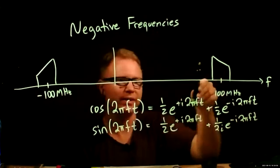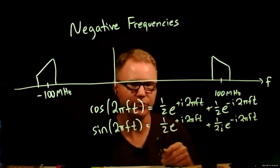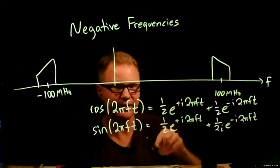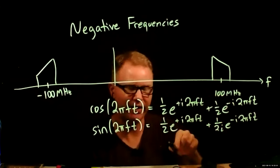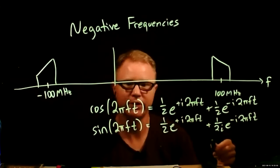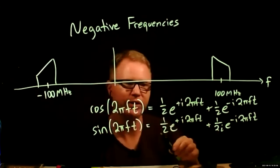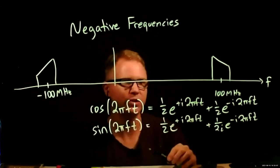When I'm plotting a power spectrum like this, I'm just taking the magnitude. So the magnitude of this is half, the magnitude of this is a half, the magnitude of that is a half, the magnitude of that is a half.